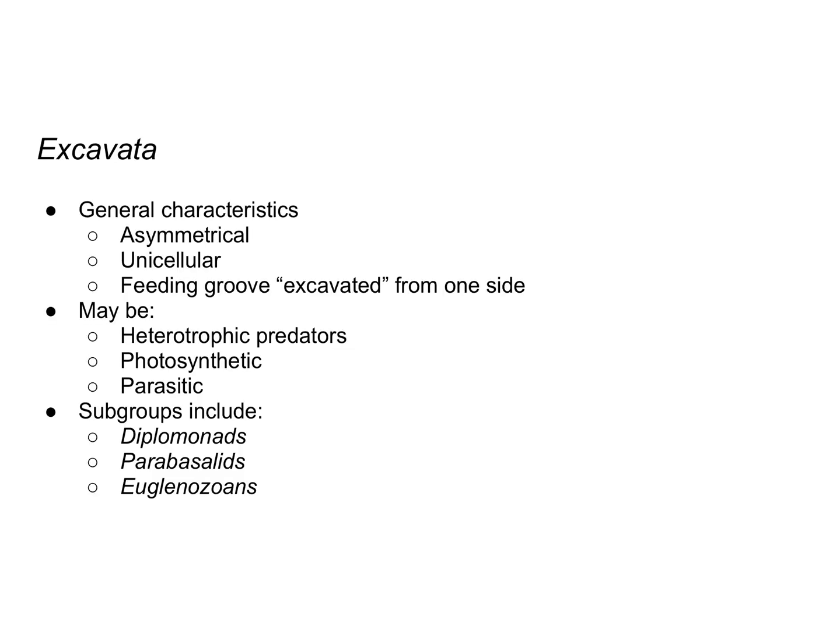In this video, we're going to talk about the protists in the supergroup Excavata. Some general characteristics of the supergroup Excavata is that they are asymmetrical, unicellular, and have a feeding groove excavated from one side — this is really where they get their name from, this feeding groove.